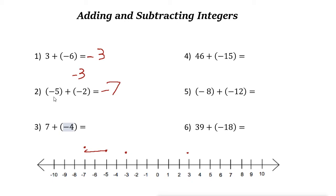If you add two integers with the same sign: if they are both positive, just add them — for example, 2 plus 5 is 7. If they are both negative, add them and put the negative sign — so negative 2 plus negative 5 is negative 7. If they have the same sign, add them and keep the sign. If they have different signs, find the difference and put the sign of the bigger number.